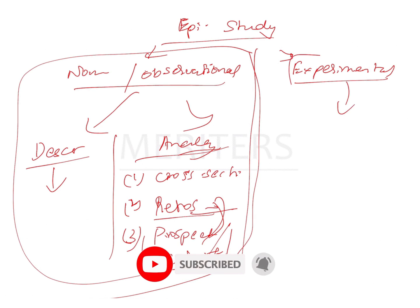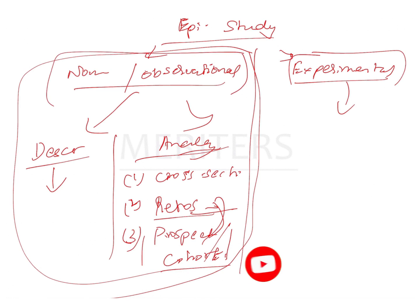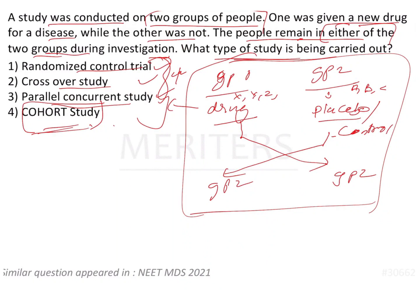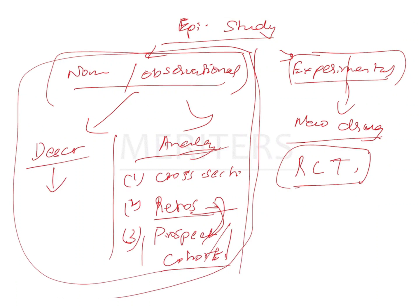This question is asking about an experimental study because they are not simply observing — they have given a new drug and are testing the patient. Experimental studies are basically RCTs. Specifically, RCT is done in two ways: crossover study and parallel concurrent study.